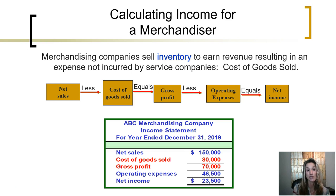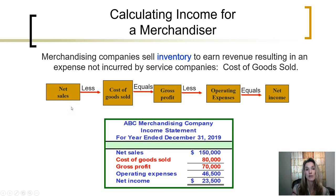We call this expense cost of goods sold. Even though it doesn't have the word expense in the title, it is an expense account just like every other expense account we've worked with. Merchandisers report their revenues earned — the amount of revenues earned as their inventory is sold — less the cost of the inventory that is sold. That one expense: revenues less cost of goods sold equals gross profit.